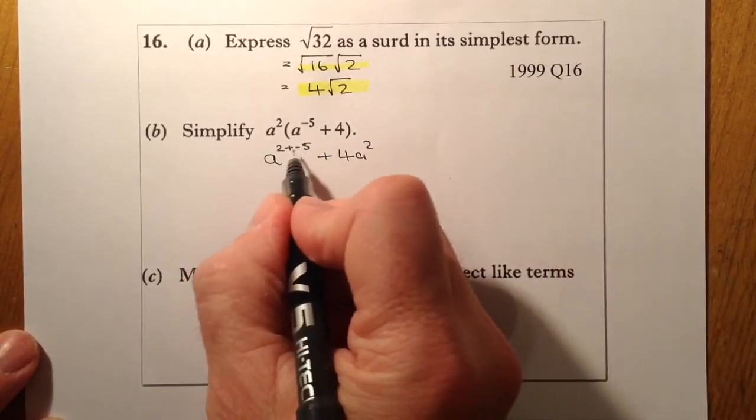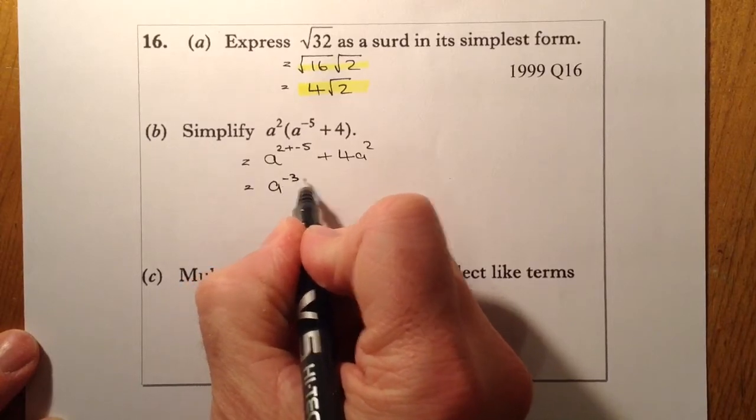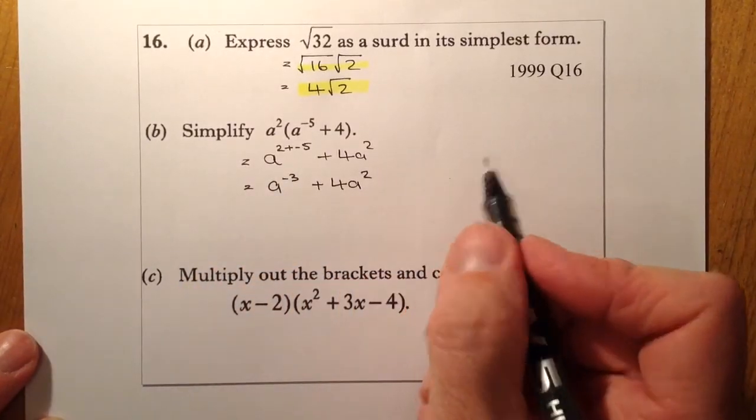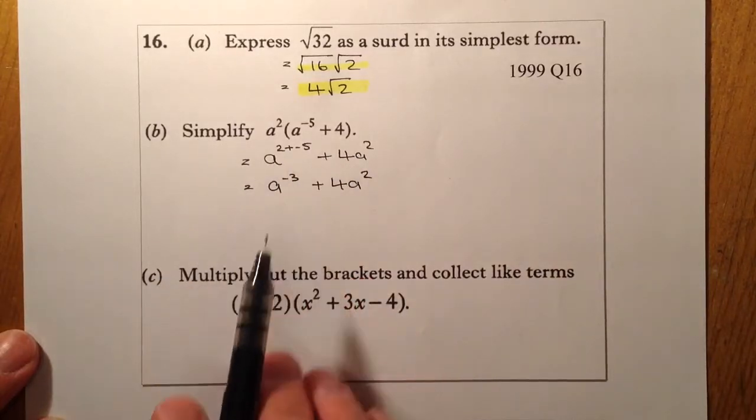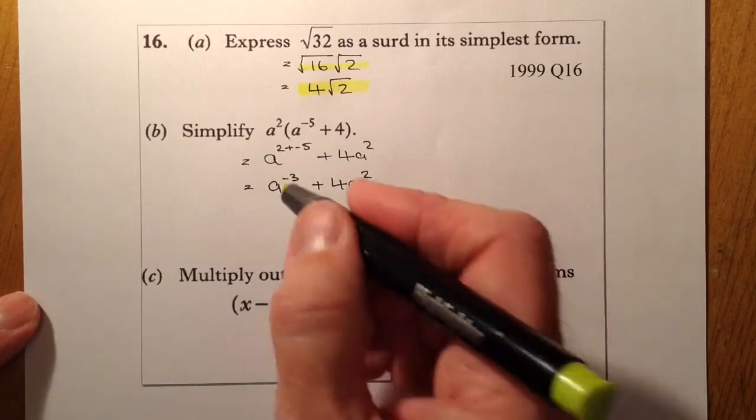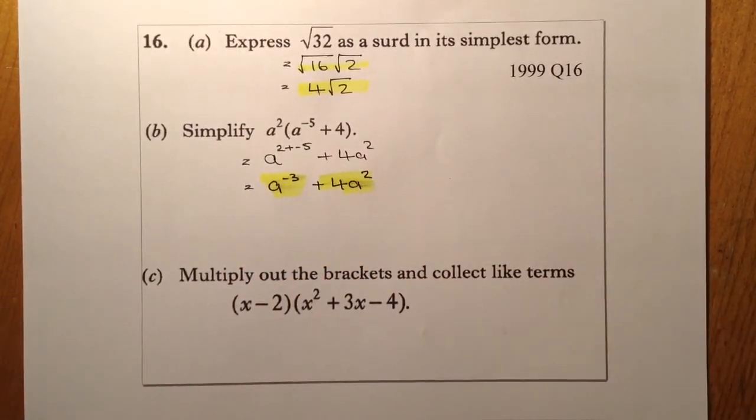Okay, I'm going to simplify this down here. And what I've got there is a to the minus 3, and that's going to be plus 4a squared. Okay, it doesn't ask me to leave it with a positive index, so I'm going to leave it like that, and that would be my final answer. So one mark here, and one mark there. So two marks for that one.